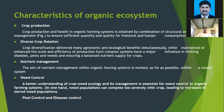The characteristics of an organic ecosystem: in crop production, health in the organic farming system is attained by a combination of structural and management measures to ensure sufficient quantity and quality for livestock and human consumption. Diverse crop rotations deliver many agronomic and ecological benefits simultaneously, while maintaining or enhancing the scale and efficiency of production. Such complex systems have a major influence in limiting diseases, weeds, and ensuring a balanced nutrient supply for crops.